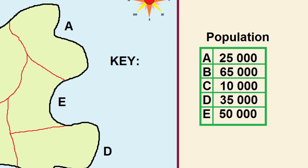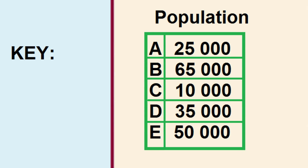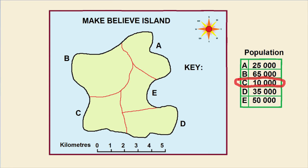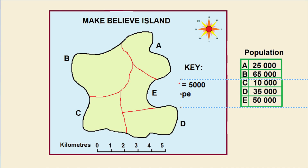Over here I have a table with the population of the different regions. The data ranges from 10,000 to 65,000 people. But first we've got to sort out our key — I'm going to make it that one dot equals about 5,000 people.